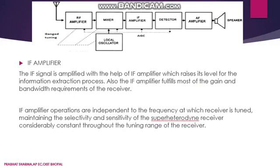The next block is the IF amplifier (intermediate frequency amplifier). It amplifies the 455 kHz intermediate frequency. The IF amplifier operates independently of the frequency at which the receiver is tuned, maintaining the selectivity and sensitivity of the superheterodyne receiver.